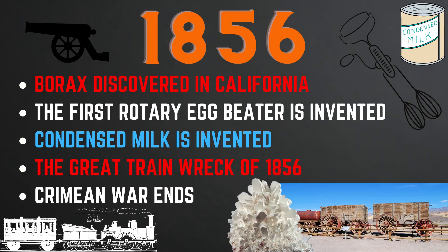In 1856, borax was discovered in California near Death Valley, the first rotary egg beater was invented, and condensed milk was invented. The Great Train Wreck of 1856 occurred on July 17th, when two trains collided killing between 59 and 67 people and leaving hundreds injured. Also that same year, the Crimean War came to an end.